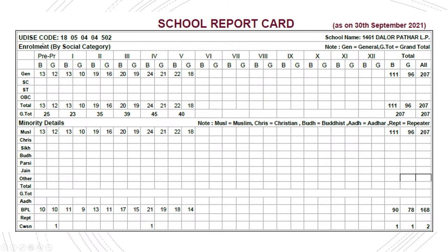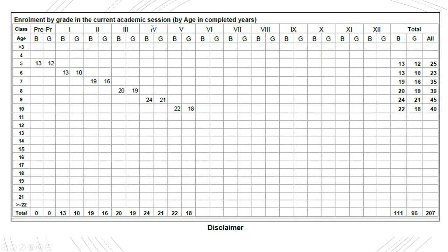Age-specific and class-specific enrollment data is collected, along with whether the Right to Education Act is being implemented, whether economically weaker sections are enrolled, number of classes taught, and number of appointments — regular, part-time, and contractual teachers. Teachers' professional qualification information is also collected. Enrollment data is available by social category and minority details, grade-wise from pre-primary through class 12. These snapshots give a sense of the extent of information collected from each and every school in India.